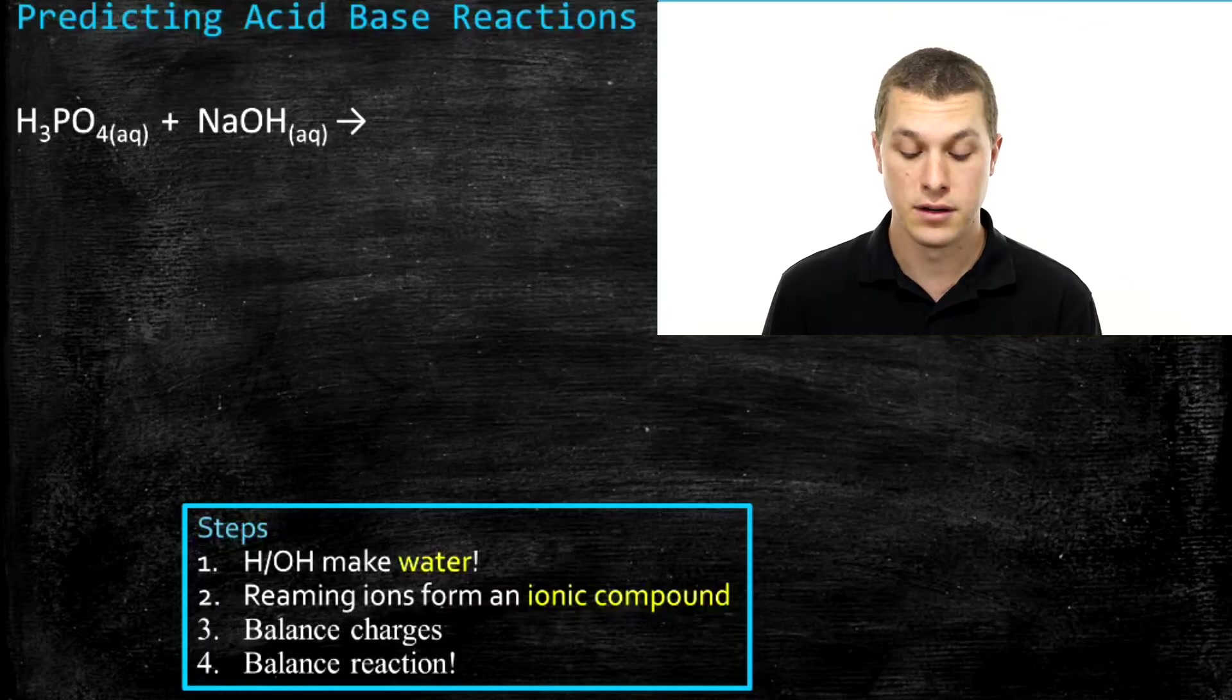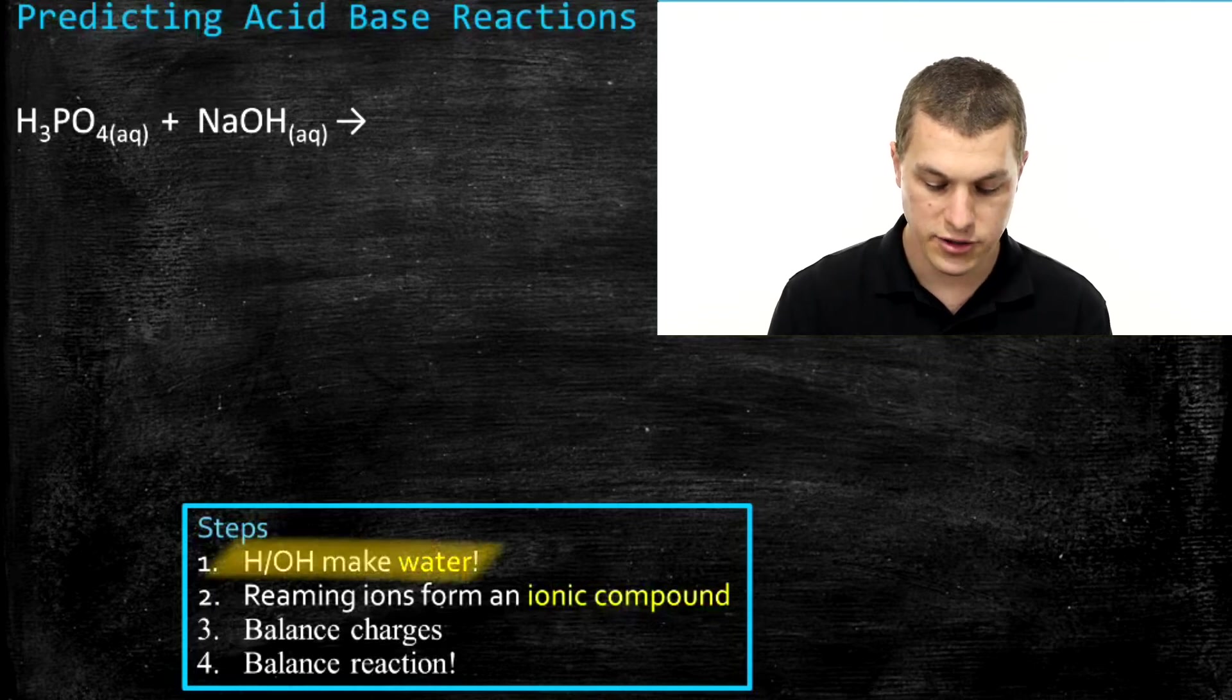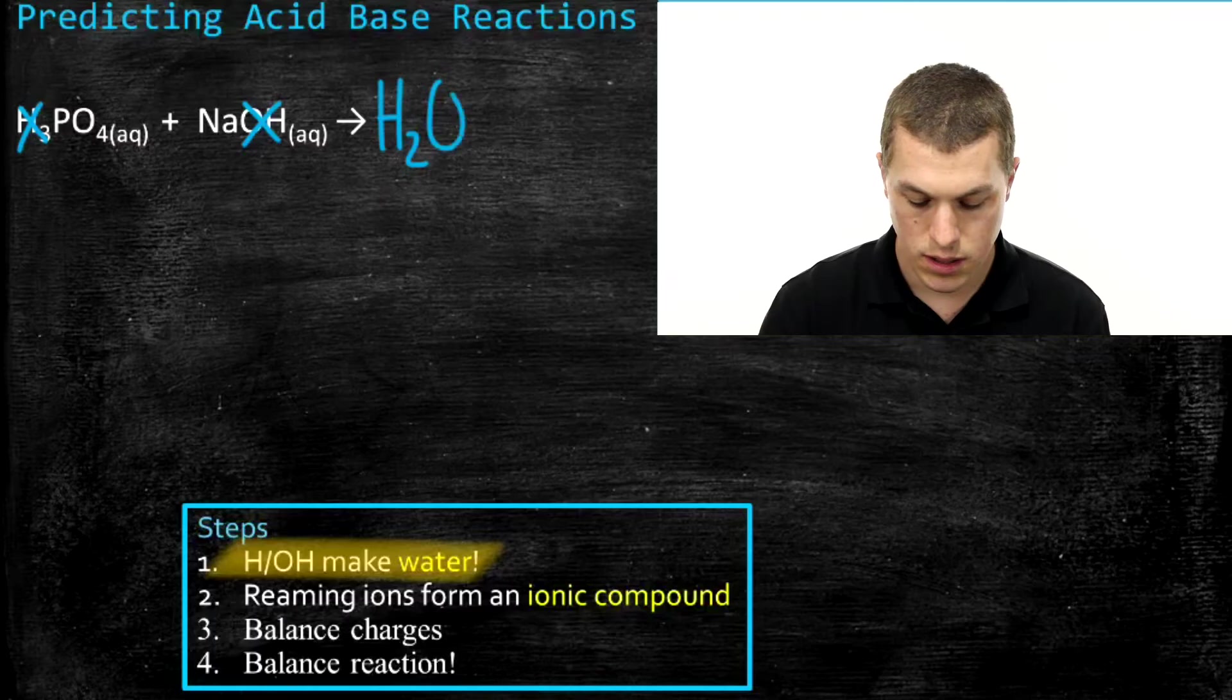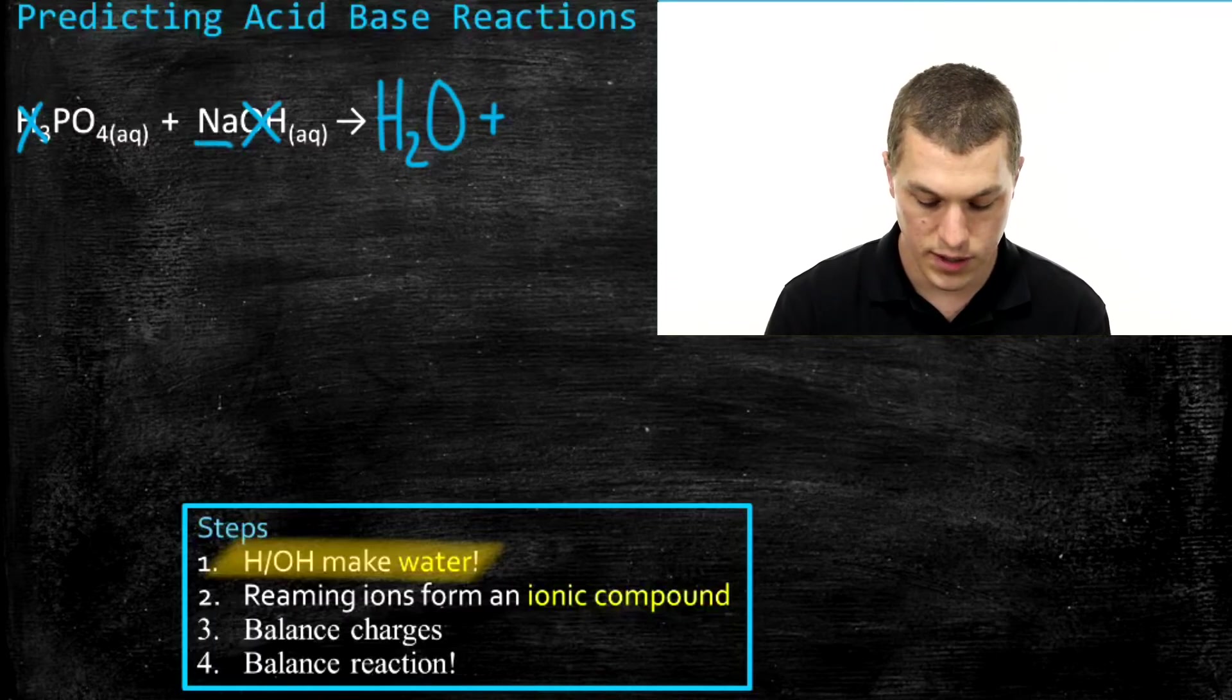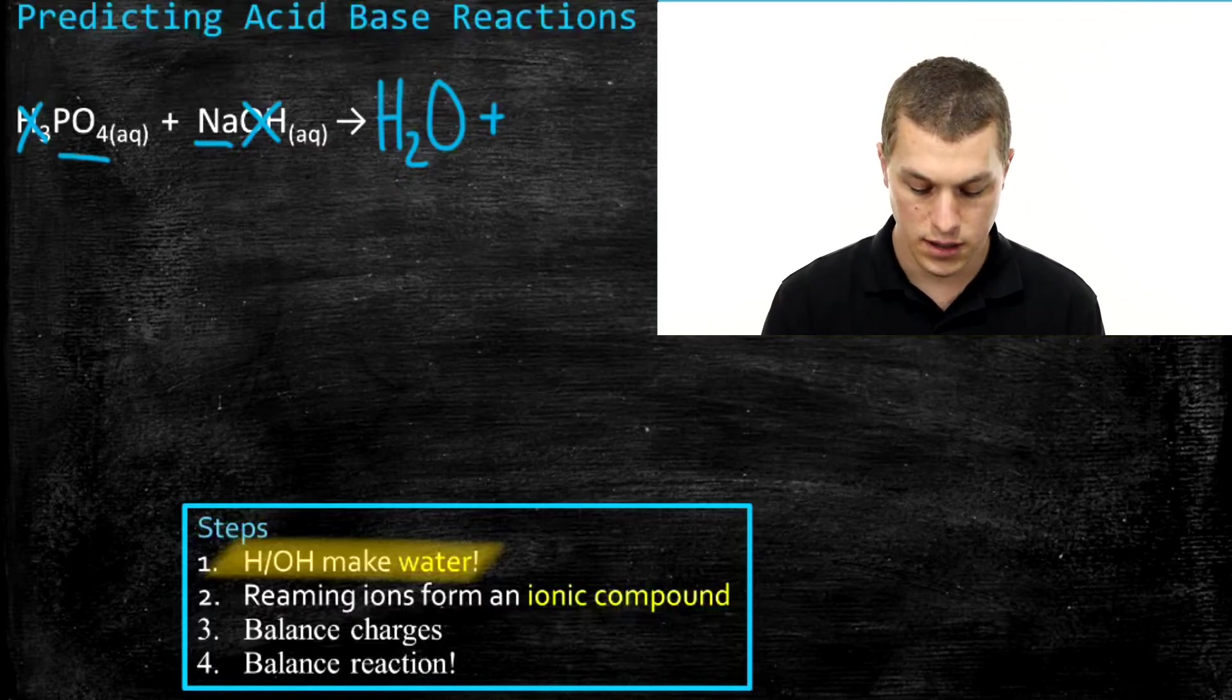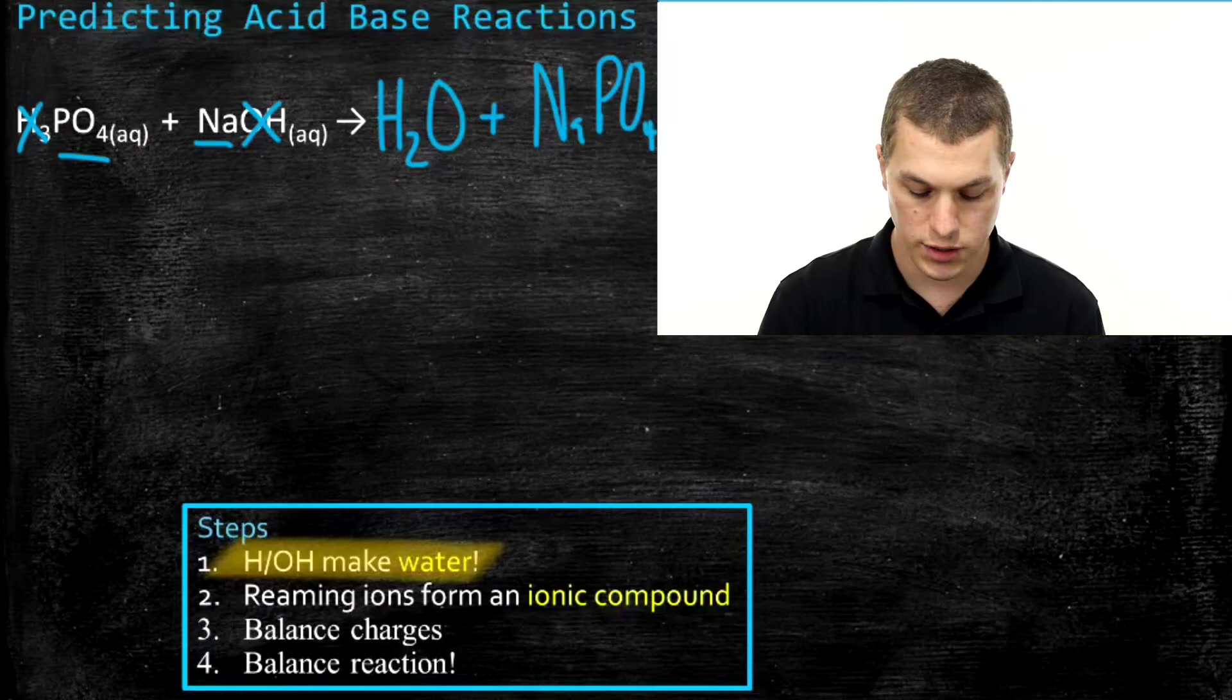This time we're combining phosphoric acid with sodium hydroxide. When we do that, we once again, just as always, combine our hydroxides and our protons, that is our hydrogen ions, to make water. So we also are going to get out an ionic compound. So what ions are left? Well, we have sodium, and we have phosphate. Sodium and phosphate are going to combine to form an ionic compound.